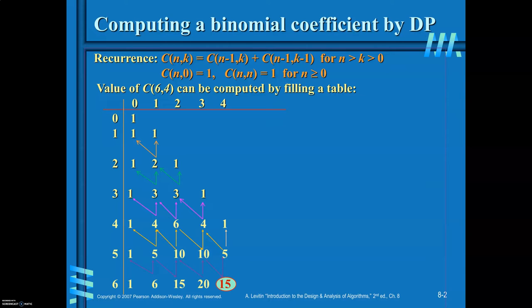Now we will see the algorithm. Vary i from 0 to N, and j from 0 to minimum of (i, k). In the 0th row we only consider index 0; you cannot choose 1 item from 0 items. So j should vary from 0 to minimum of (i, k).